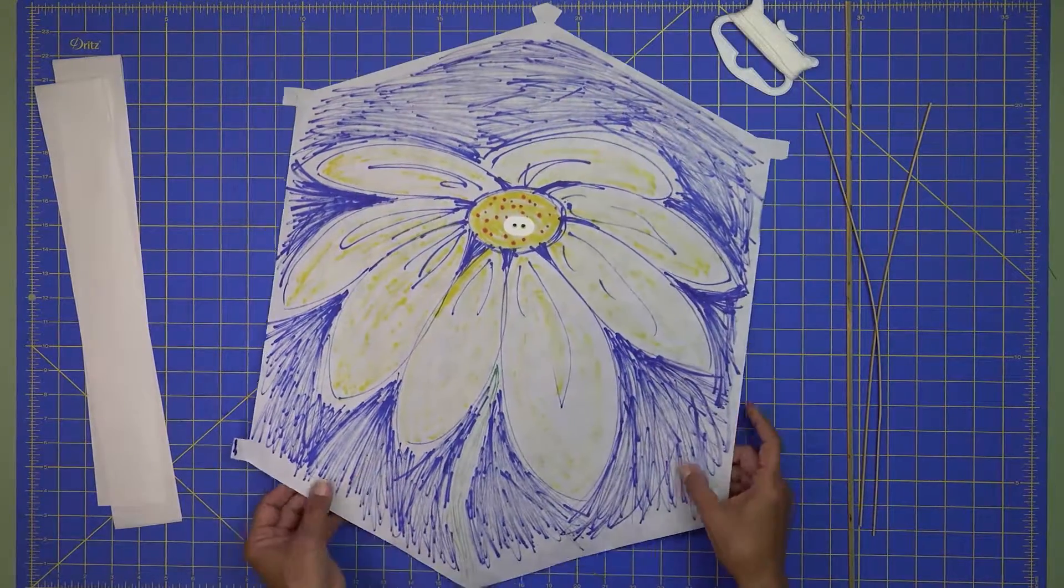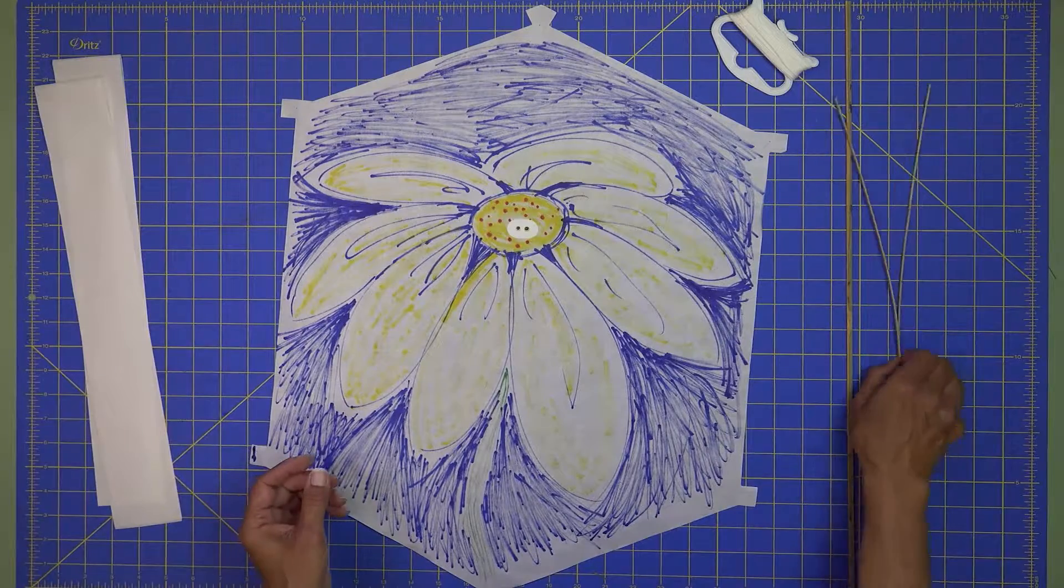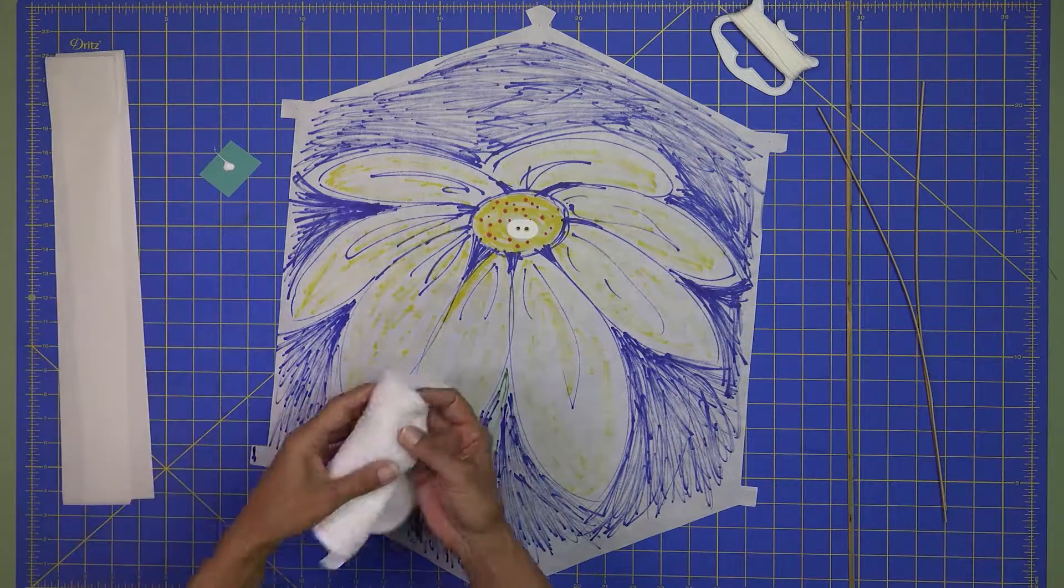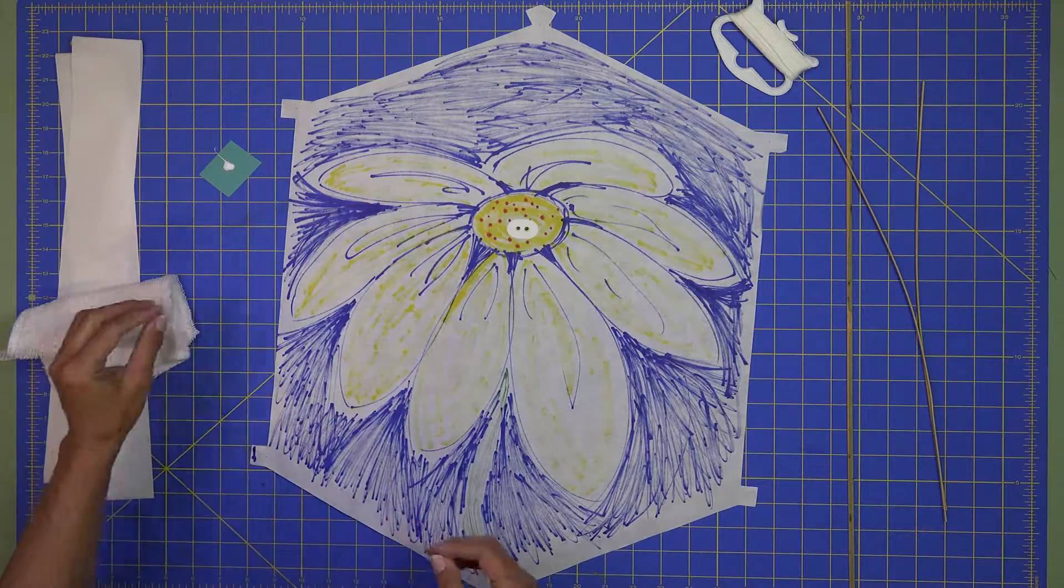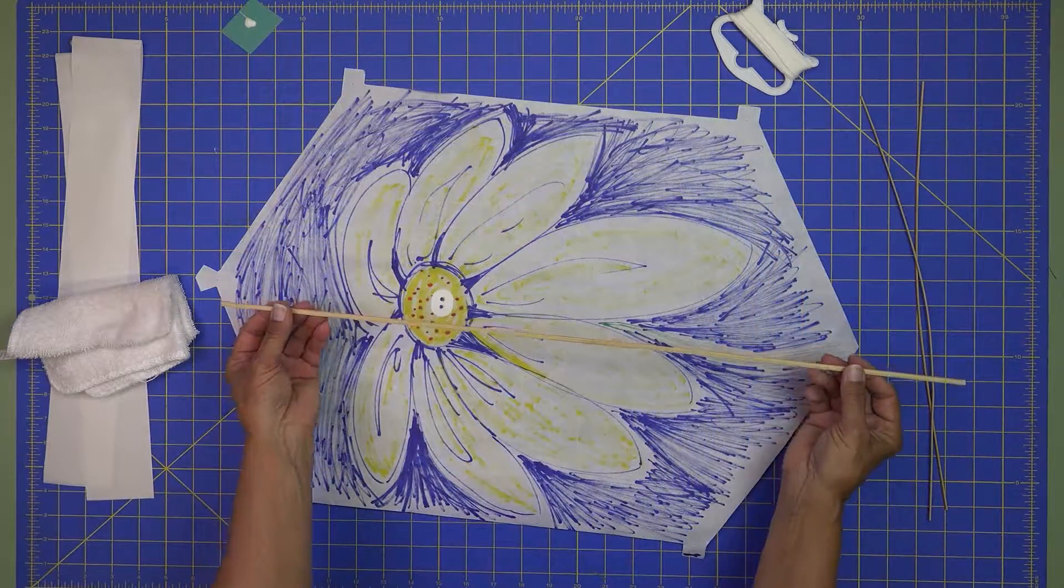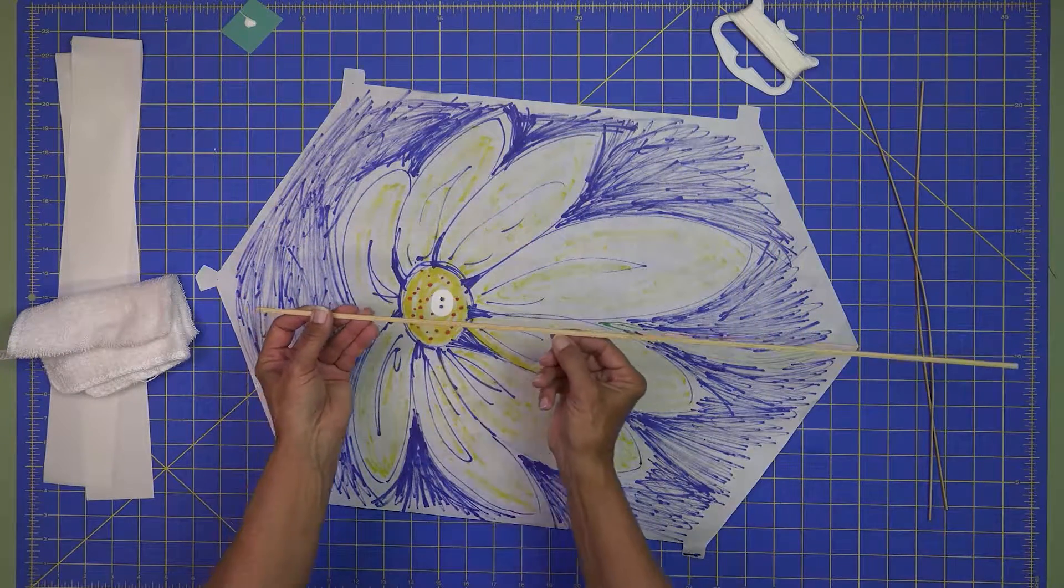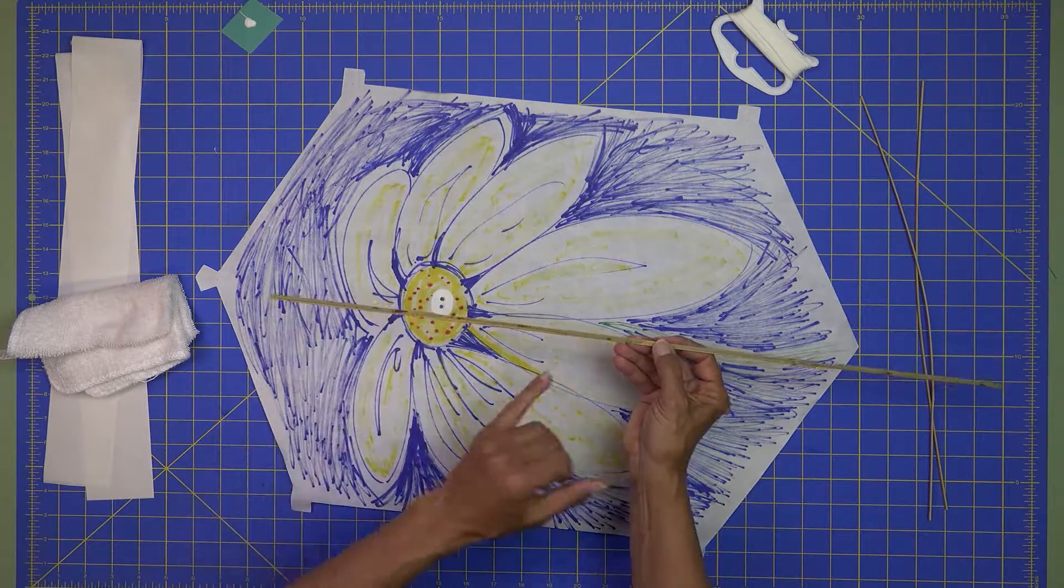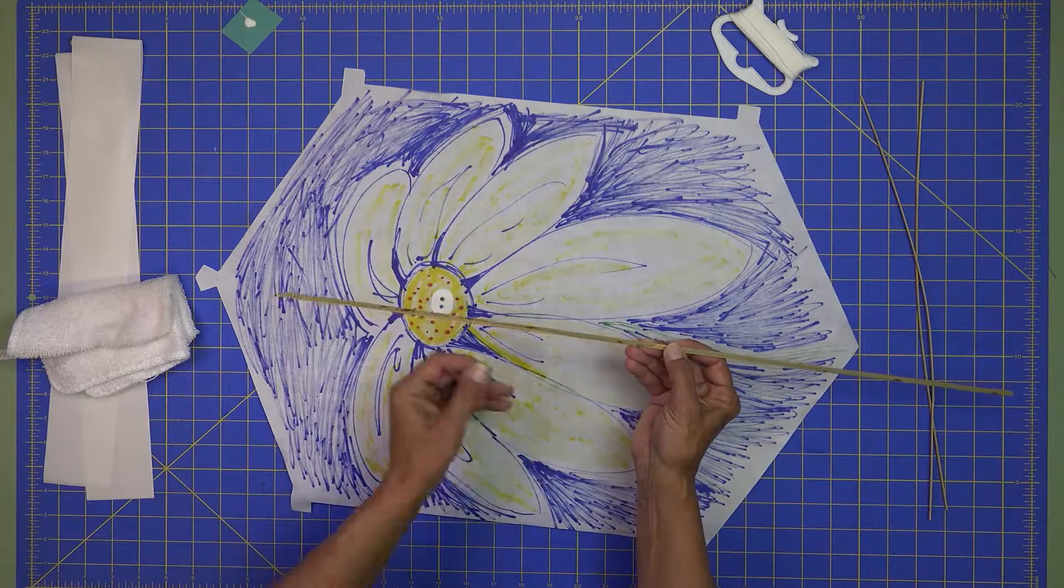I also like to keep a little cloth nearby that's slightly damped to help keep my fingers clean. You're going to notice with the bamboo that there's a raw side where you can clearly see the grain, and then on the other side you'll see some green marking, which is actually the bamboo skin.